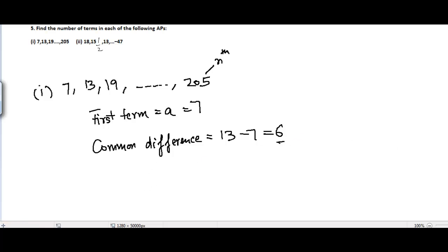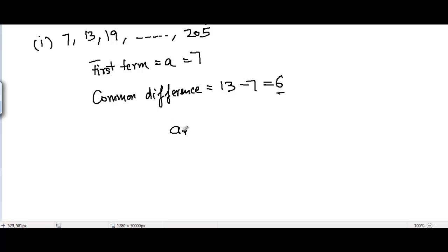Now we have a formula that we use to find the nth term of any given arithmetic progression, which is an = a + (n-1)d, where a is the first term, d is the common difference, and n is the location of any particular term of AP.